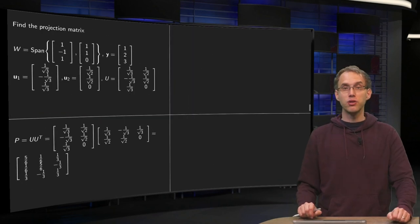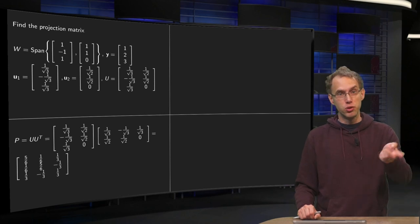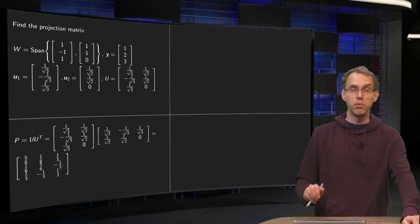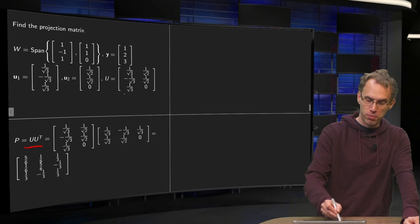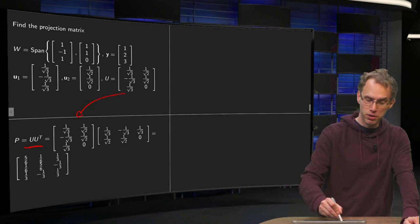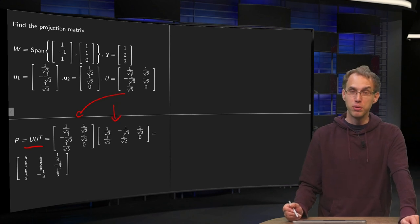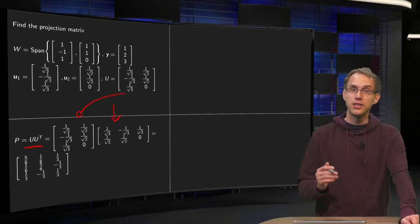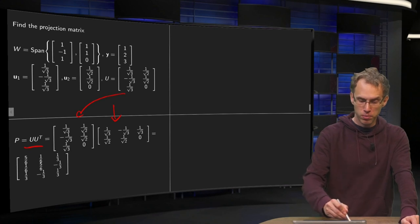Let us compute our projection matrix first in the way P equals U times U transpose. We put our U here, take the transpose and put it next to it, and all we have to do is compute the matrix product. Let us do the first column using the row-column rule.